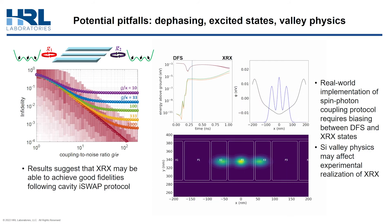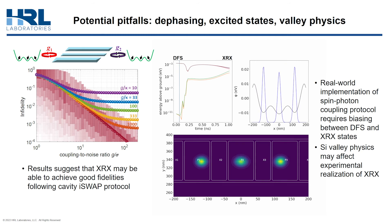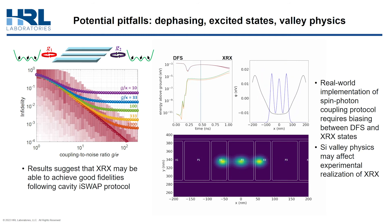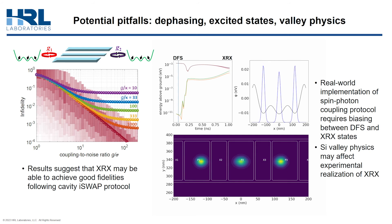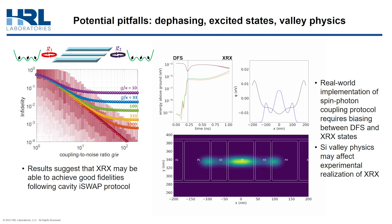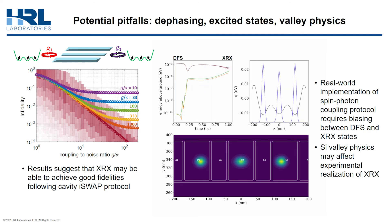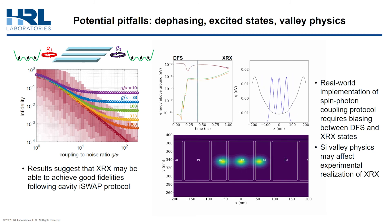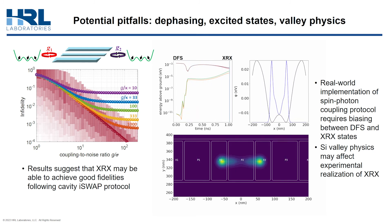In fact, simulations suggest that XRX may be able to achieve good fidelities following a cavity iSWAP protocol, assuming a reasonably good cavity quality factor. The left plot shows Bell state fidelity following such a protocol as a function of the ratio of G to the variance of J fluctuations, which is related to the J-noise amplitude. Fidelities in excess of 99% are possible for low cavity loss and large coupling-to-noise ratios, similar to those attainable in the XRX regime.